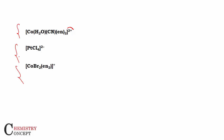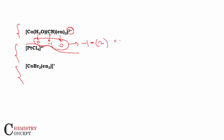When we apply the first method, we note: water is neutral, CN⁻ (cyanide) is minus one, and en (ethylenediamine) is zero. Summing the ligand charges comes out to minus three.